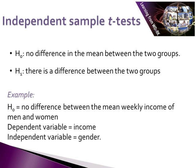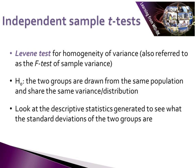Our dependent variable is income and our independent variable is gender, so the level of income is dependent on gender. We also test for homogeneity of variance, and for that we also need to set up a hypothesis. The Levene's test is also referred to as the F-test — the F-test for sample variance. Our null hypothesis in this case is that the two groups are drawn from the same population and share the same variance and distribution. The Levene's test null hypothesis for our example is that there is no difference in the variance of weekly income for men and women. It is important to examine the descriptive stats generated to see what the standard deviations of the two groups are.